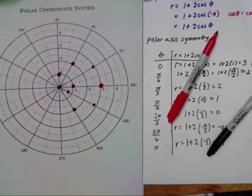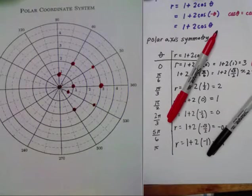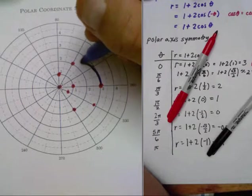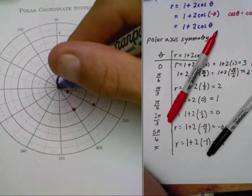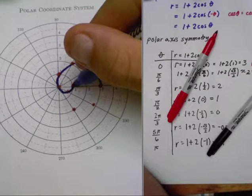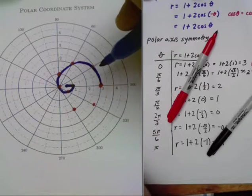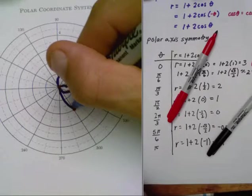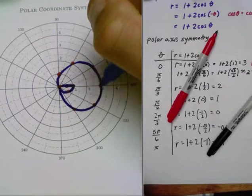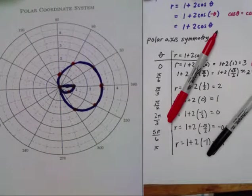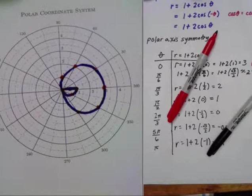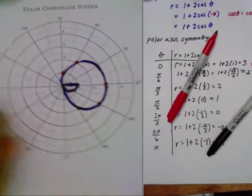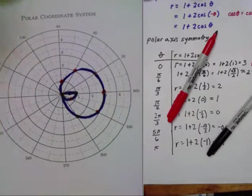We go back through the pole, down, and around. It's not a perfect graph, but that's the general graph of this Limaçon. If you have any questions or comments, let me know. We'll see you next time.